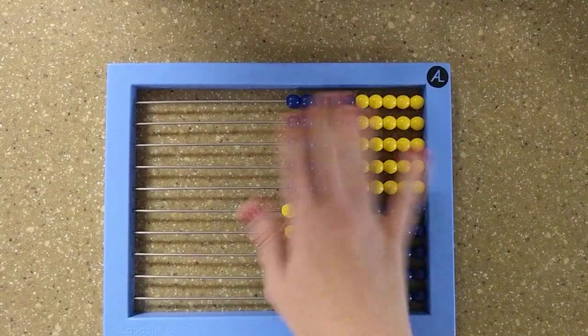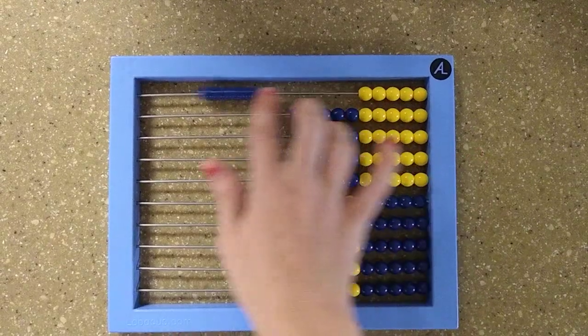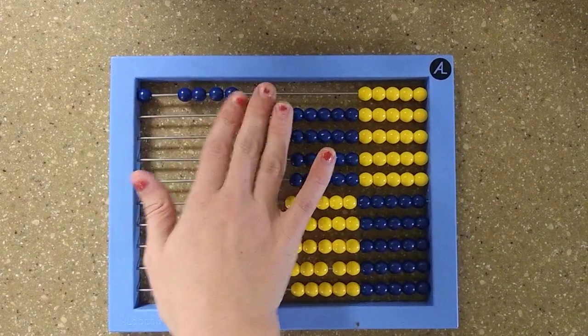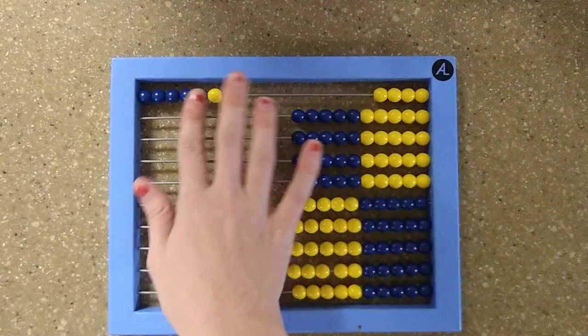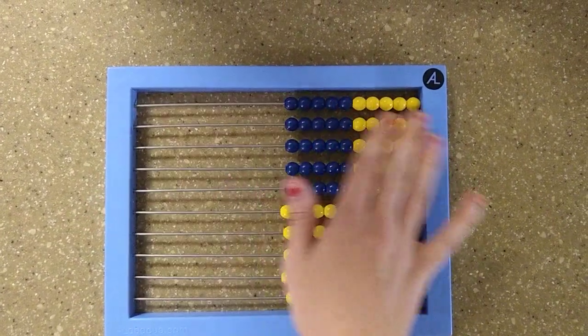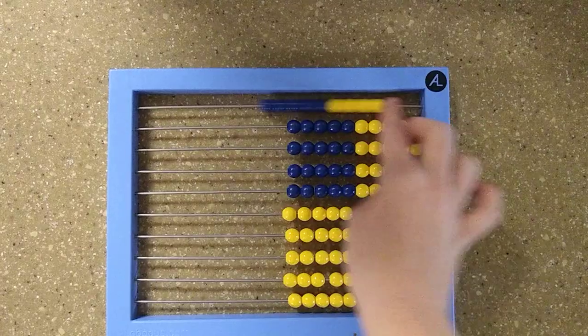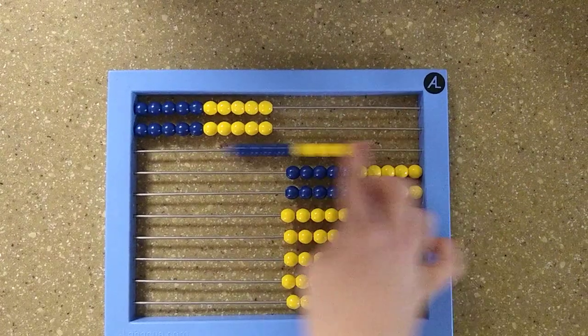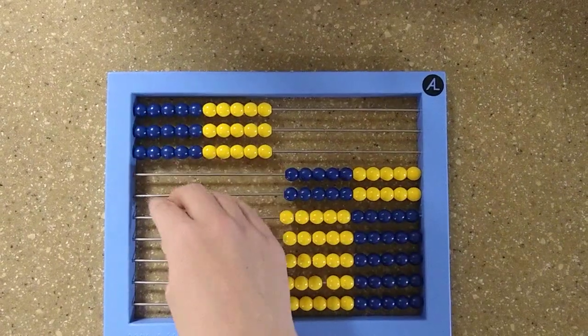And then once they're really good with just doing that one through ten, so you subitize one through five, and then you practice knowing five and one, five and two, all those, and then you do the pairs to ten. And then you can subitize large numbers because then you can subitize this way too.